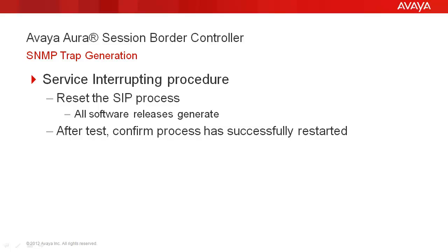We will provoke a service interrupting event by restarting an SBC process, specifically the SIP process. Other traps will be generated as a result of restarting the SIP process, but we will focus on its trap details. All software releases will generate the trap associated with a process restart. After this test, we will confirm that the process did restart successfully.